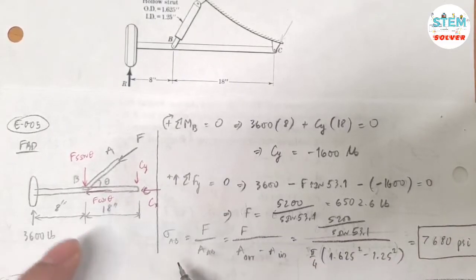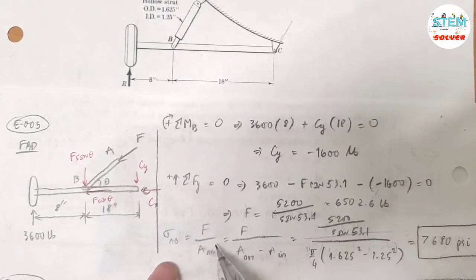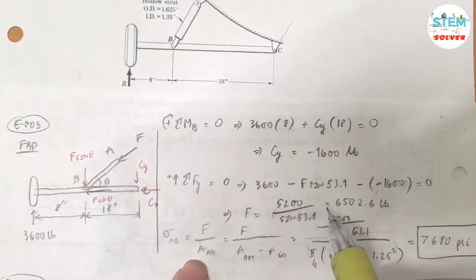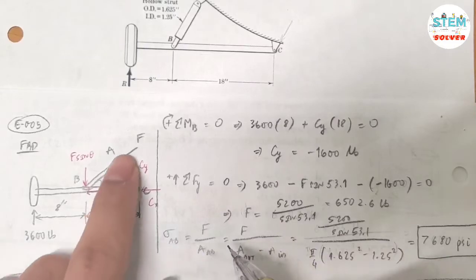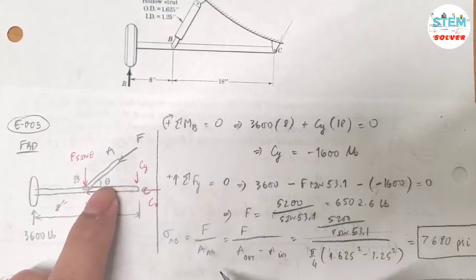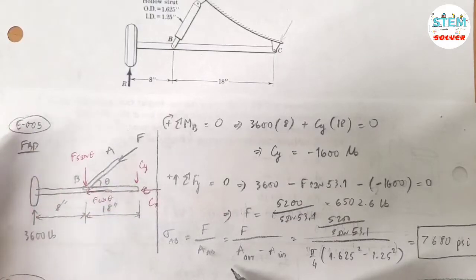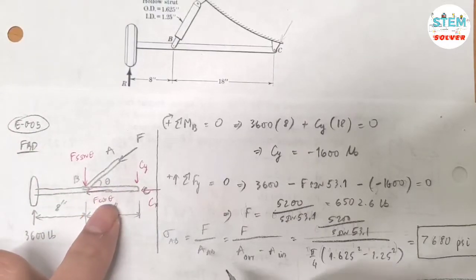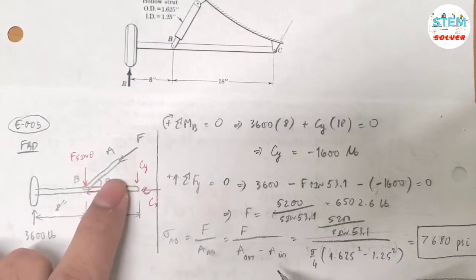Now, the compressive stress is equal to the force divided by the area. So the force is what we just found, 6502.6 pounds, and the area... so what is the area of the strut AB? Well, the area, because this is a hollow strut, so the area is the area outside minus the area inside.